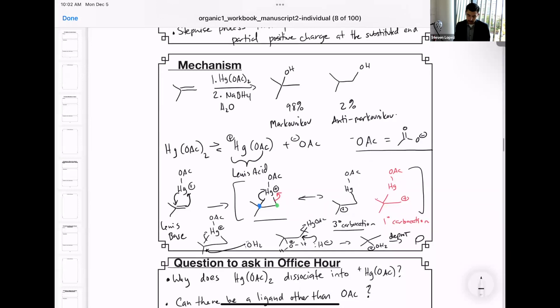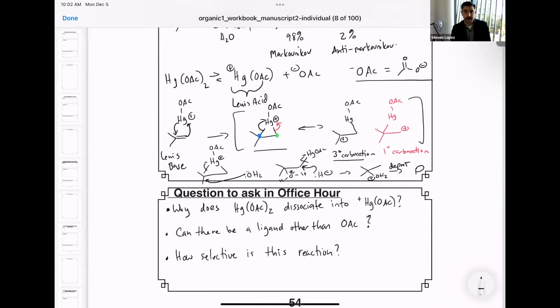So questions you might want to ask in Office Hour: Why does mercuric acetate dissociate from the dimer, from the version where there are two acetates connected to one where there's just one? Can there be a ligand that will work other than acetate? And three, how selective is this reaction?